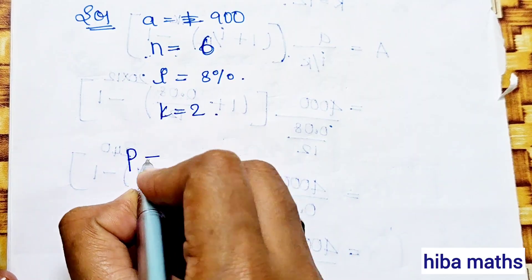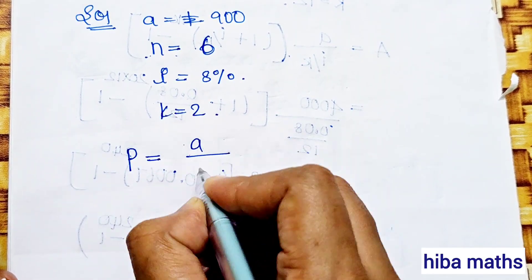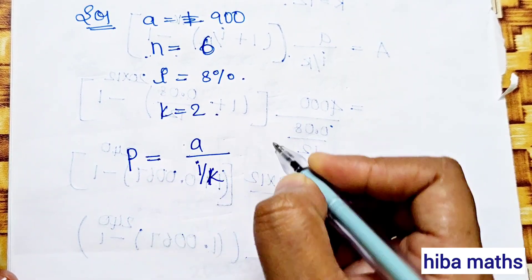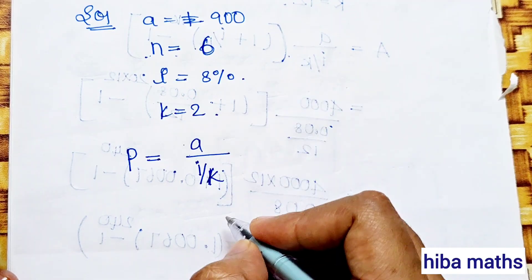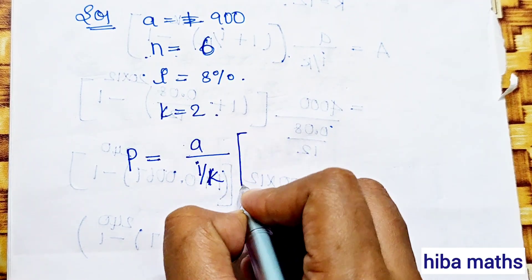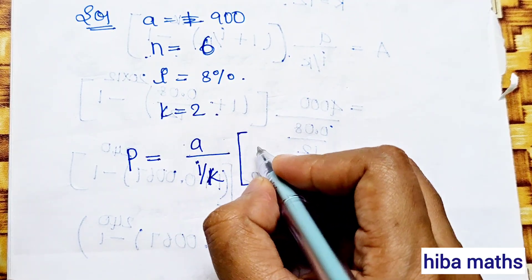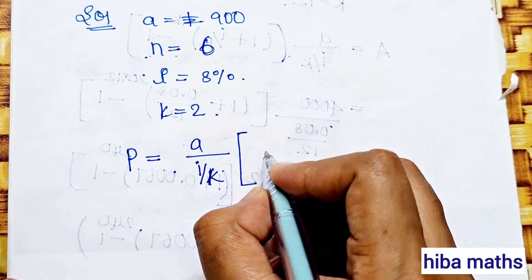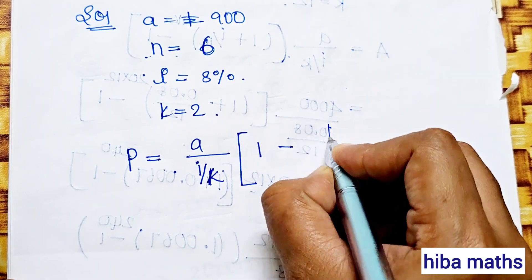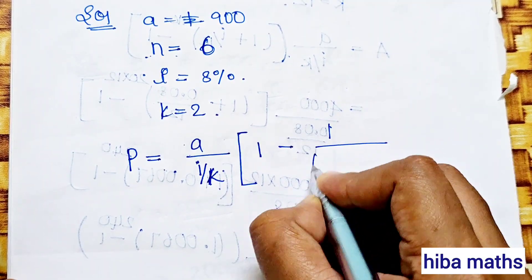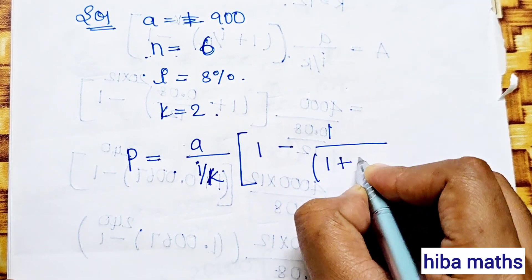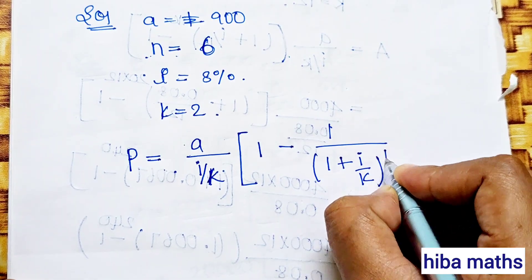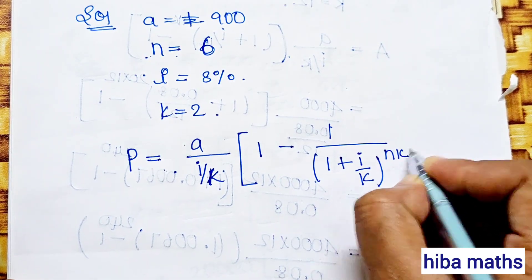The formula is P equals a divided by (i/k), into 1 minus 1 by (1 plus i by k) whole power n into k.